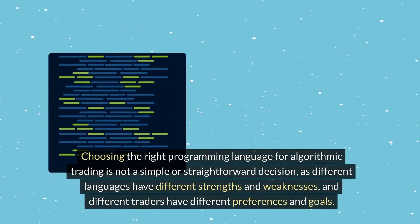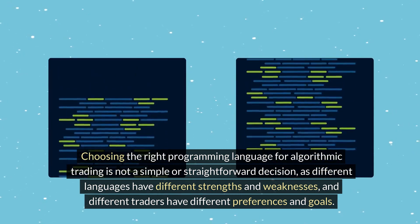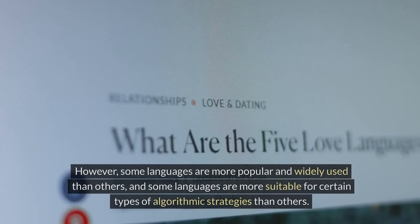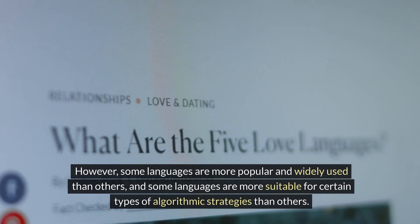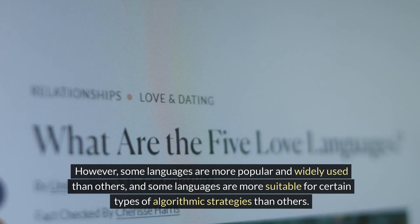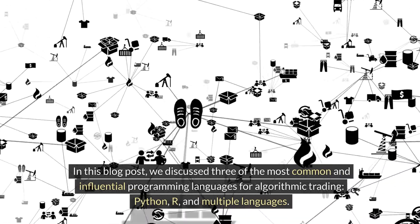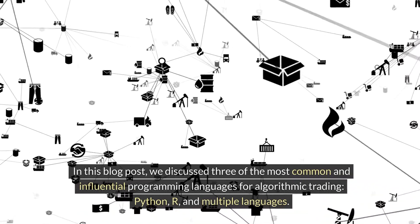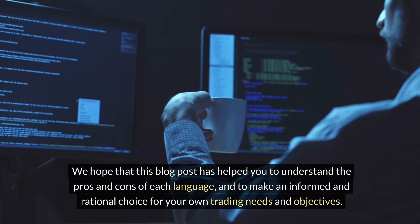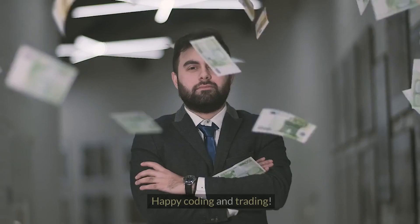Choosing the right programming language for algorithmic trading is not a simple or straightforward decision, as different languages have different strengths and weaknesses, and different traders have different preferences and goals. In this video, we discussed three of the most common and influential programming languages for algorithmic trading: Python, R, and a multi-language approach. We hope this has helped you understand the pros and cons of each language and make an informed choice for your own trading needs and objectives. Happy coding and trading!